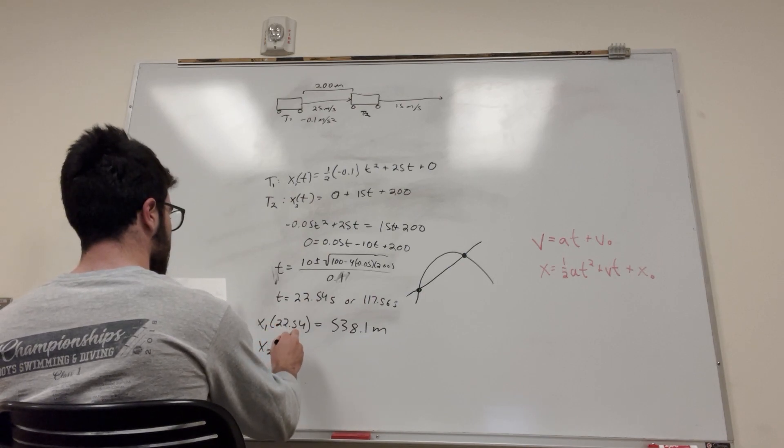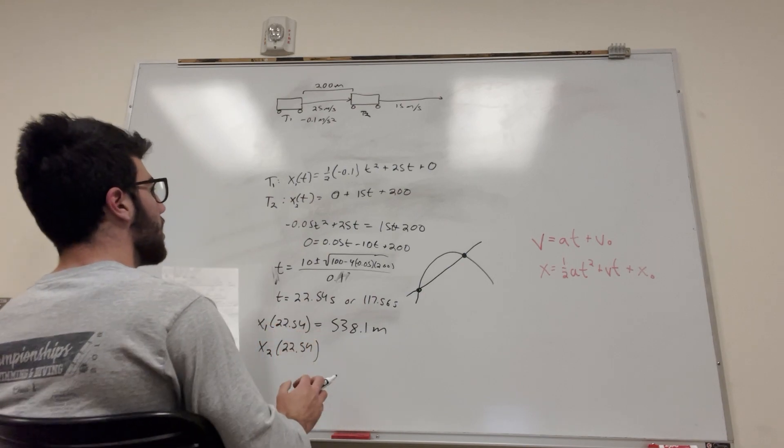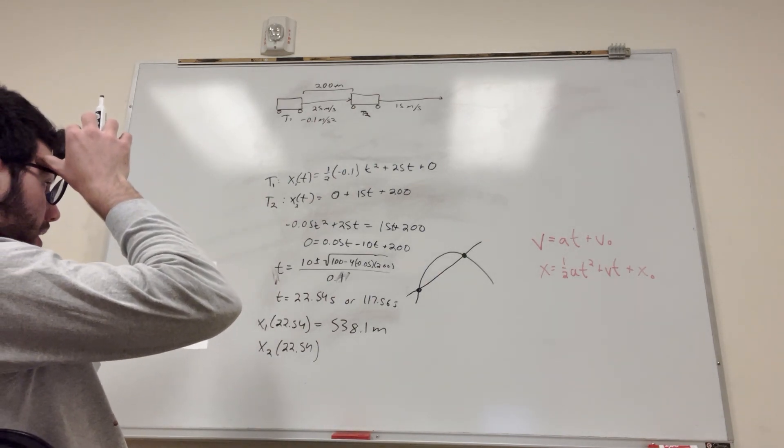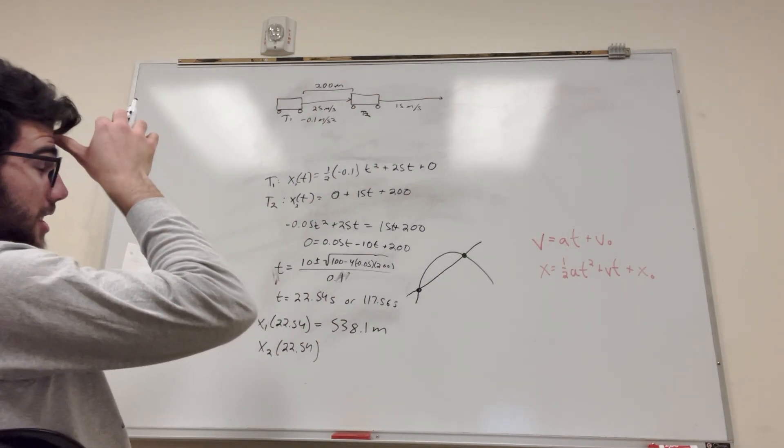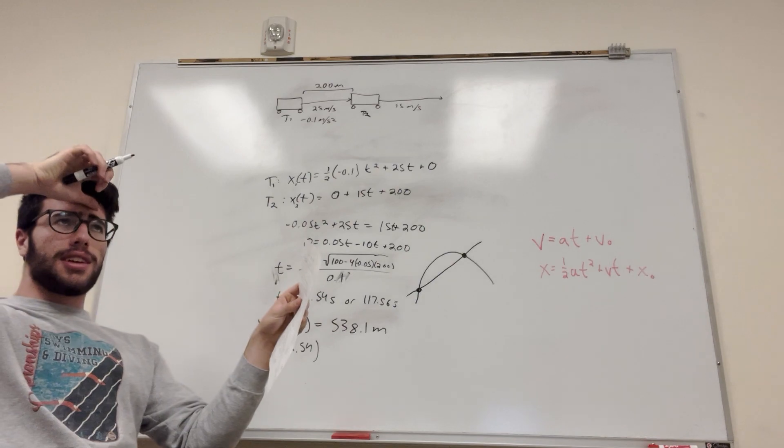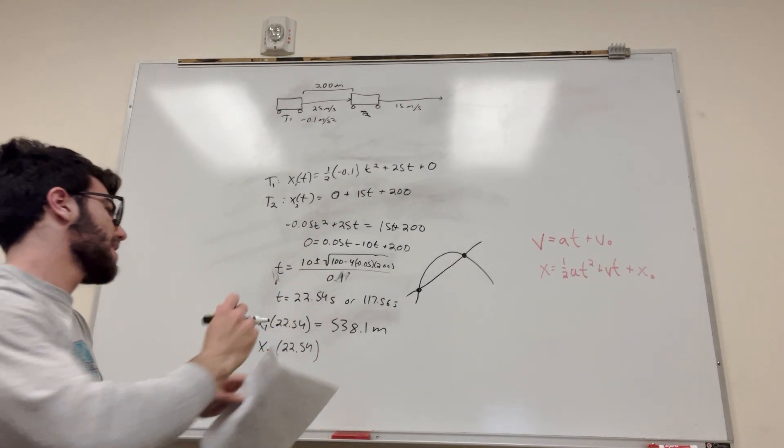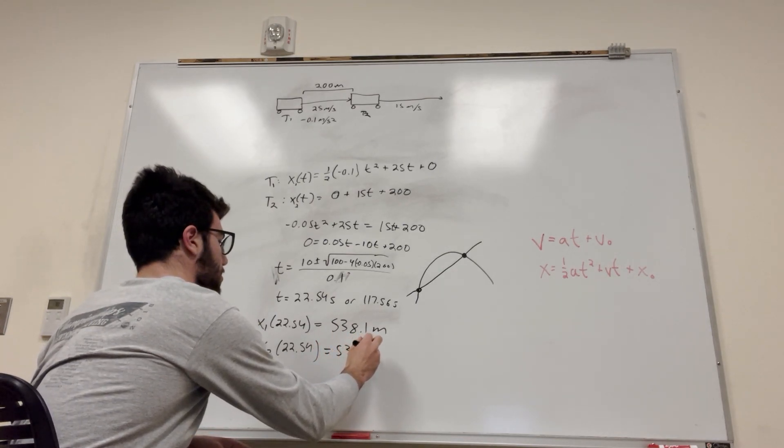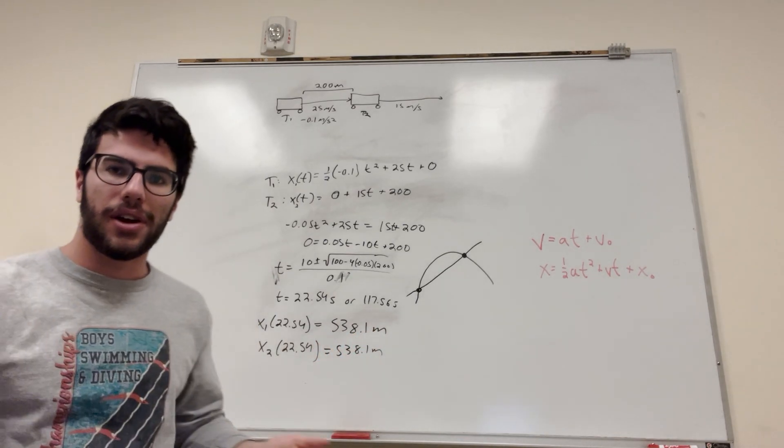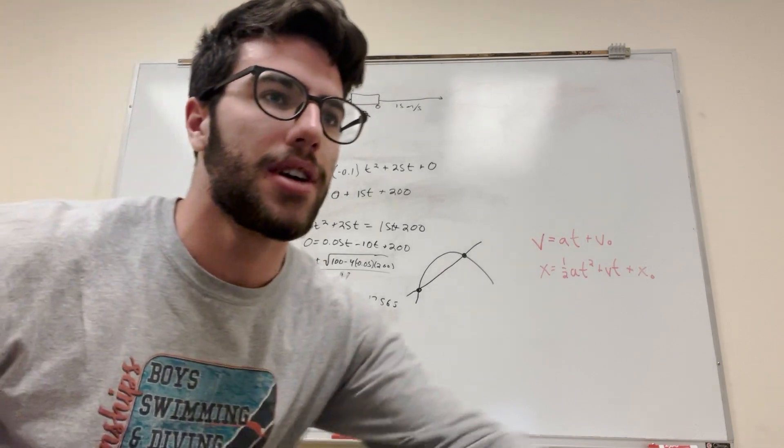Let's do it for two. X of 2 is equal to 22.54. I'm just going to do this in my head a little bit. So 22 times 15, it's going to be like... 20 times 15? That's like 300? Yeah, it's going to be the same number. 538.1 meters. There you go, guys. So that's the distance. That's all I'm looking for.